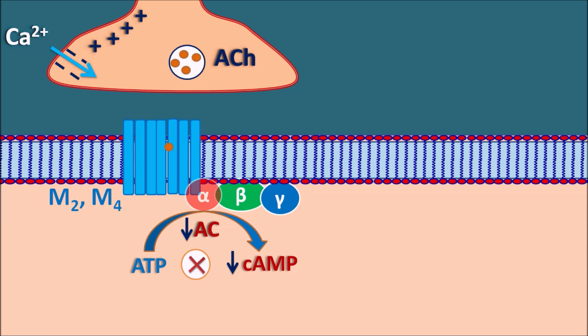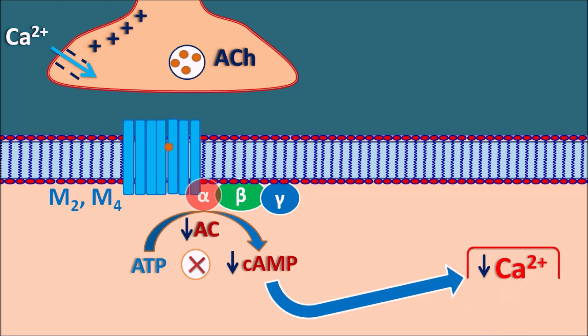As cyclic AMP levels decrease, protein kinase activation decreases, resulting in decreased calcium levels within the postsynaptic membrane. Calcium is very important for contraction of the heart, so when calcium levels are reduced the heart is unable to contract, resulting in decreased rate as well as force of contraction. M2 and M4 receptors can also act through the beta-gamma subunit, which opens potassium channels.